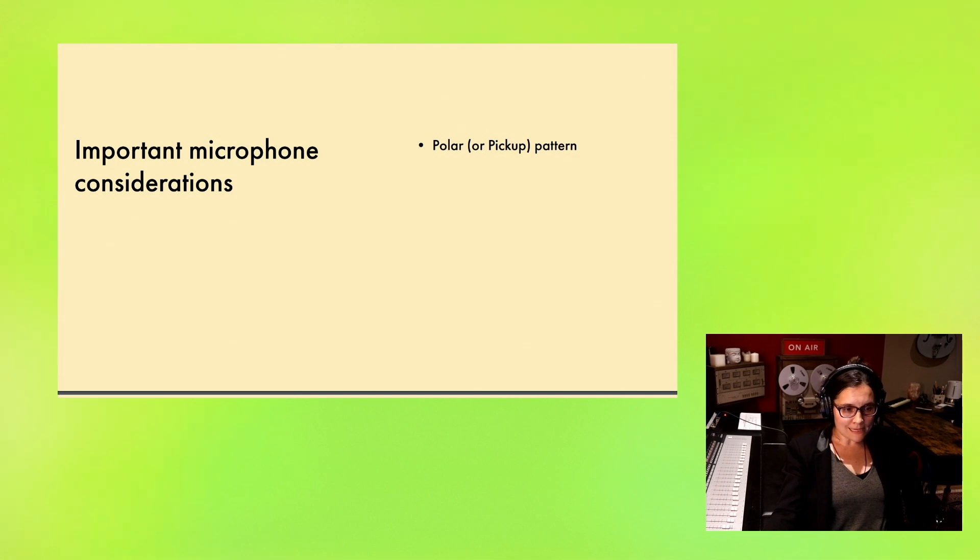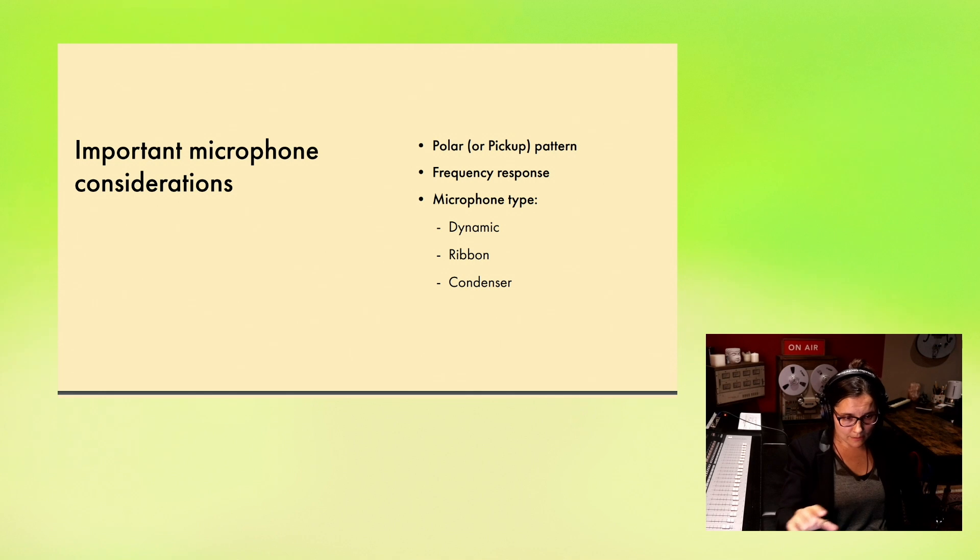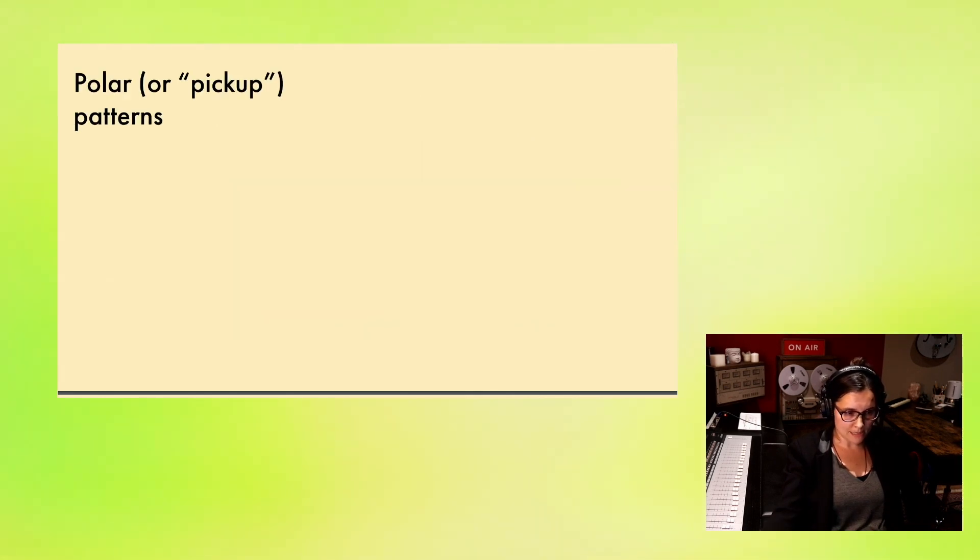One item is the polar or pickup pattern. Another item is the frequency response. A third item is just what type of microphone it is. There are several different types of microphones. The three most common that you'll run into in recording and in studio settings are dynamics, ribbons and condensers. These items are all things that we are going to talk about in the upcoming minutes.